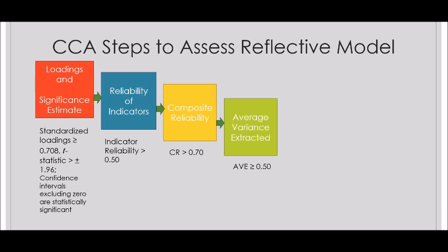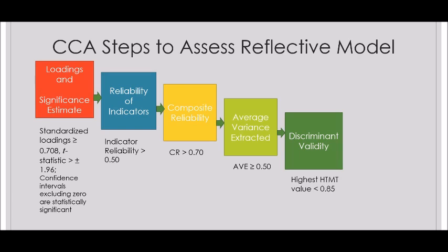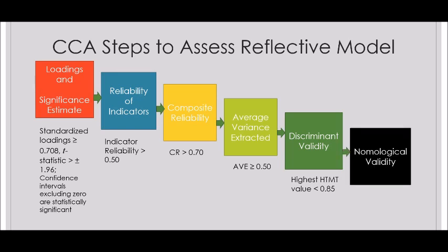The next step is to estimate discriminant validity. Check the HTMT matrix generated by SmartPLS — the highest value of HTMT should be less than 0.85. If the highest value is less than 0.85, it provides evidence of discriminant validity for your model. The next step is to estimate nomological validity, and the final step is to estimate predictive validity — I will explain both of these later.